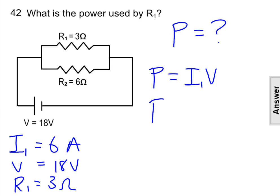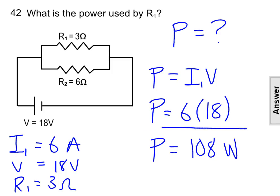So to find the power at R1, we'll take the current at R1, 6 amps, times the voltage, 18 volts, and we get power equals 6 times 18 or 108 watts.